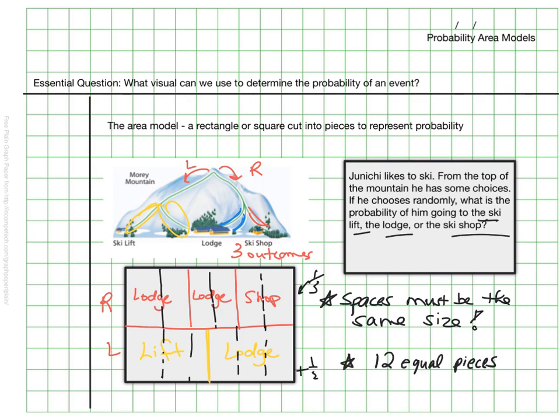I now have 12 equal pieces in my representation here, and I know that one, two, three, four, five, six, seven of them go to the lodge, so that means the probability is seven out of our 12 spaces for the lodge.